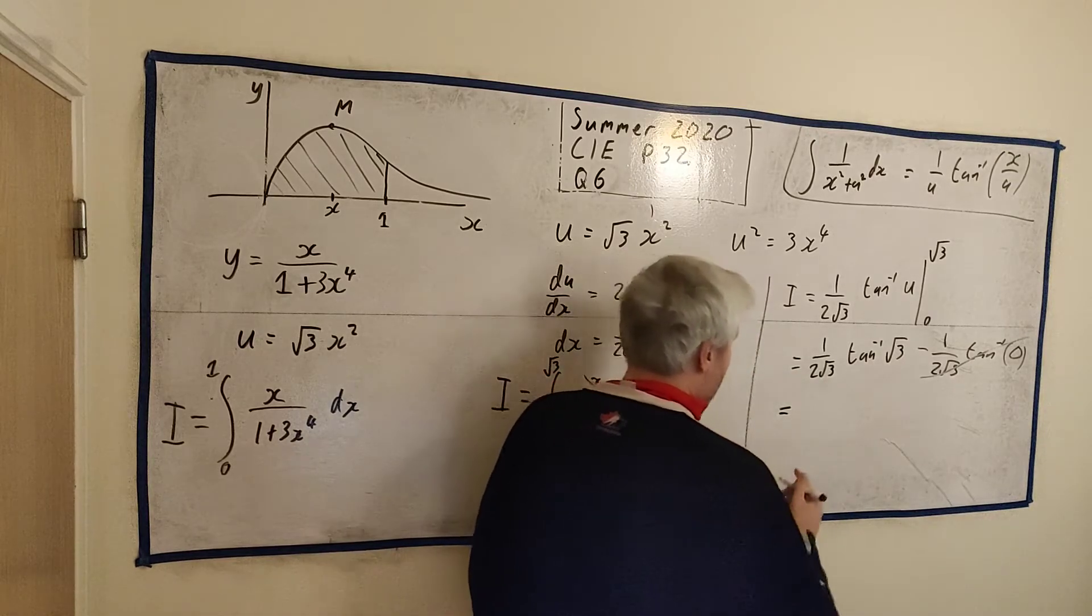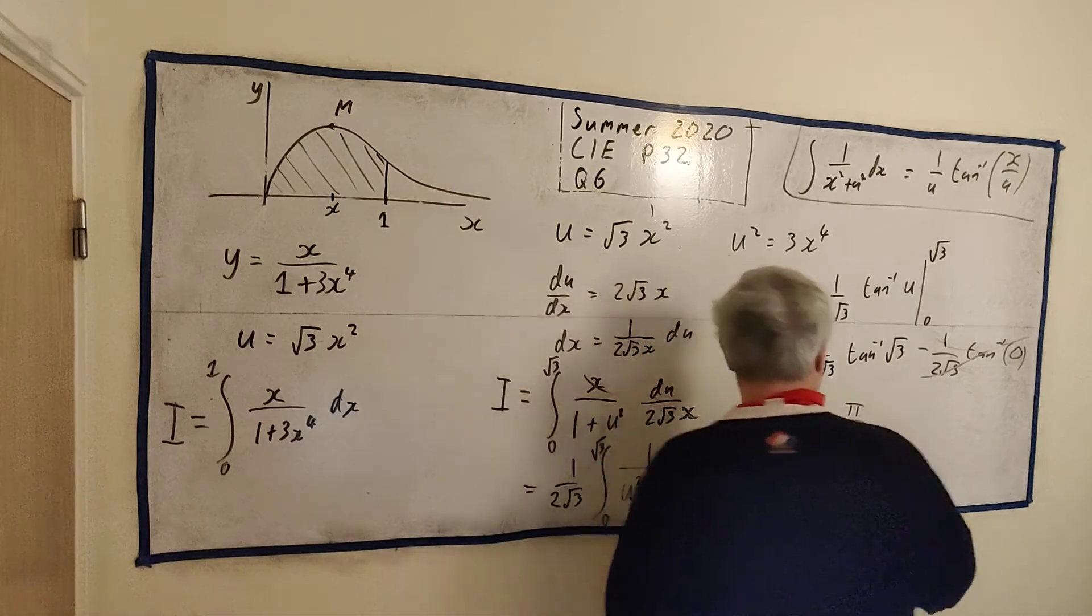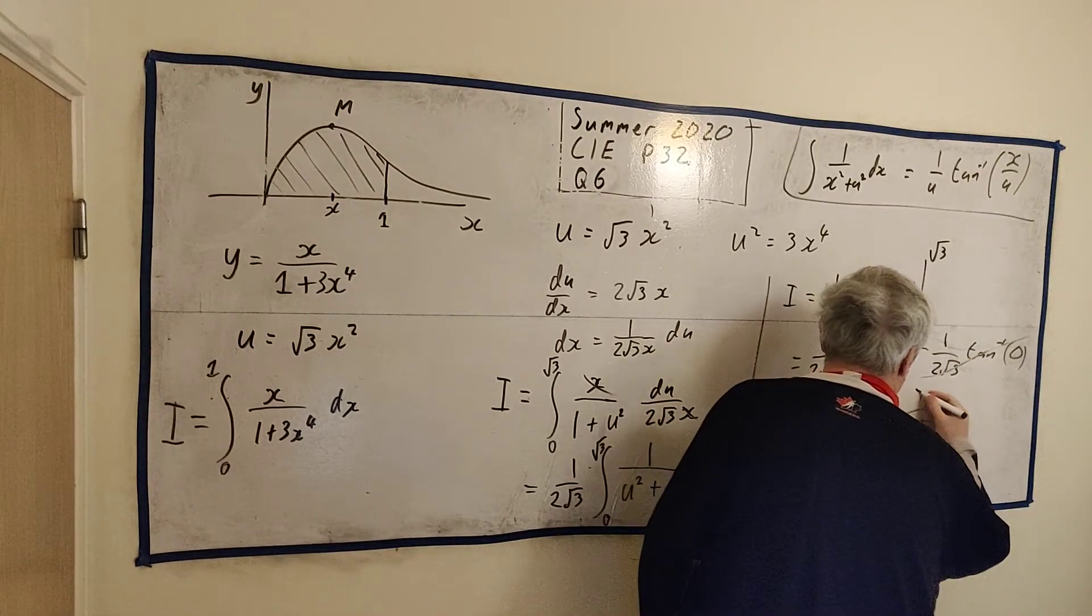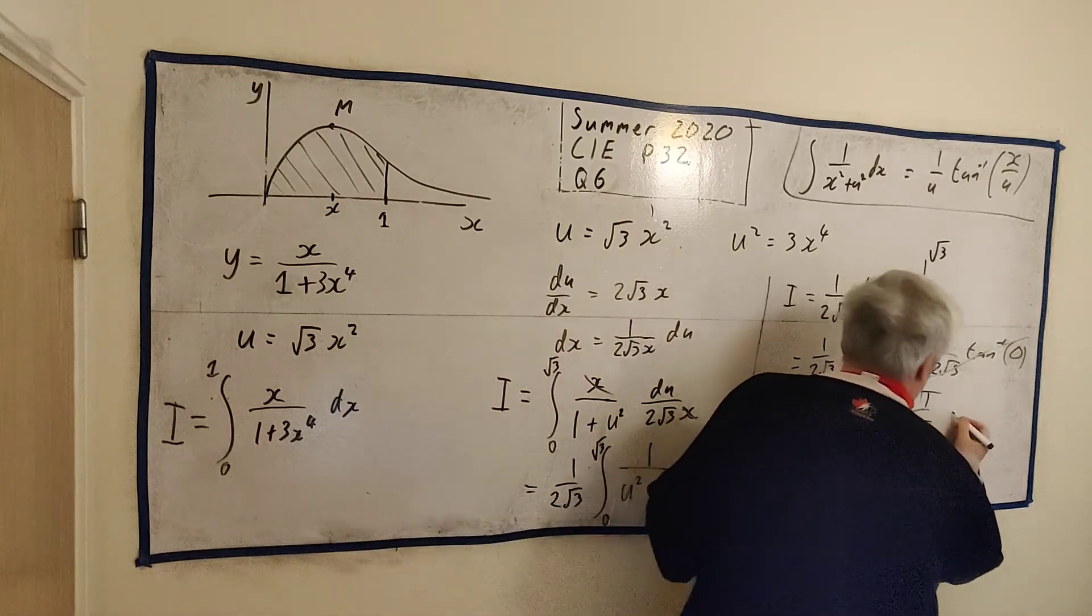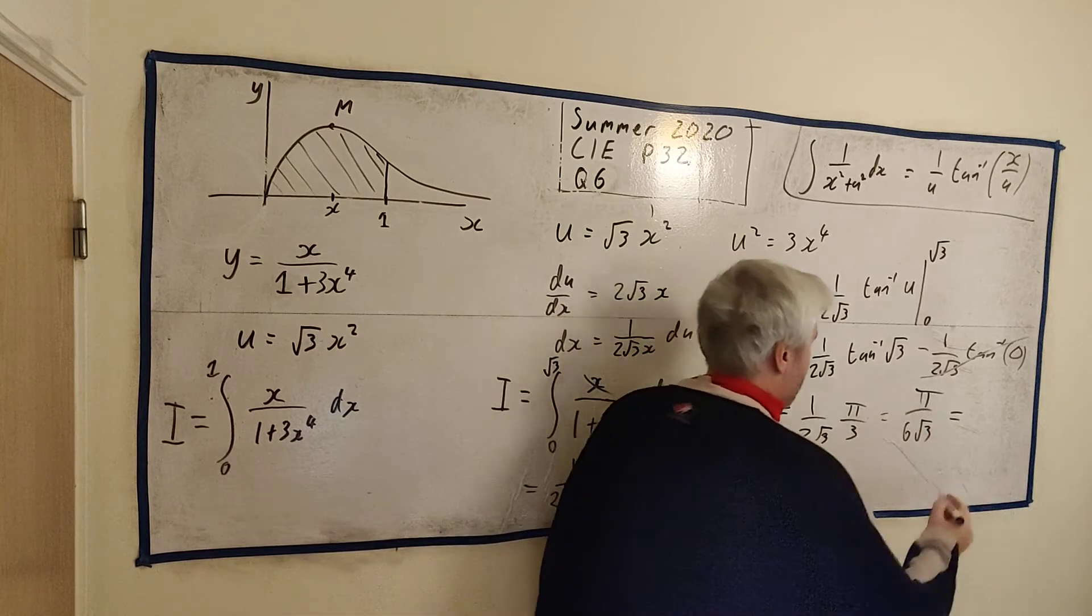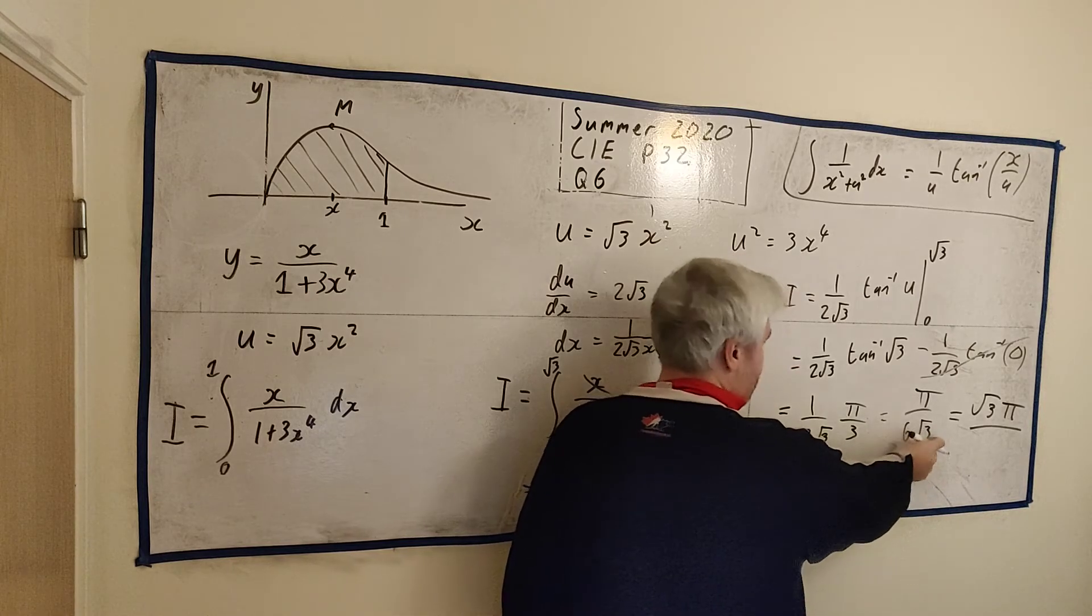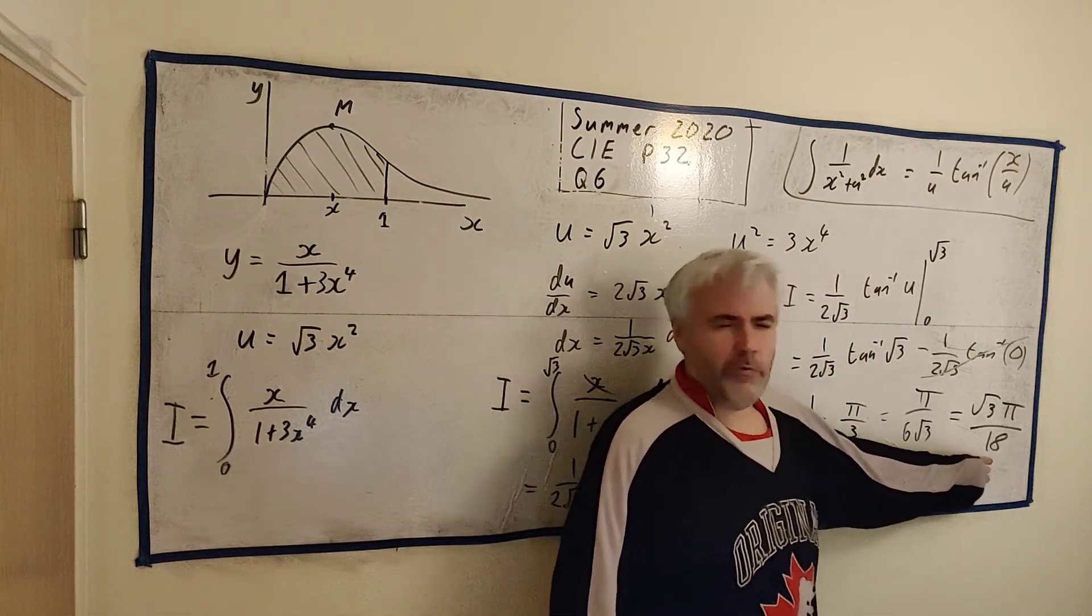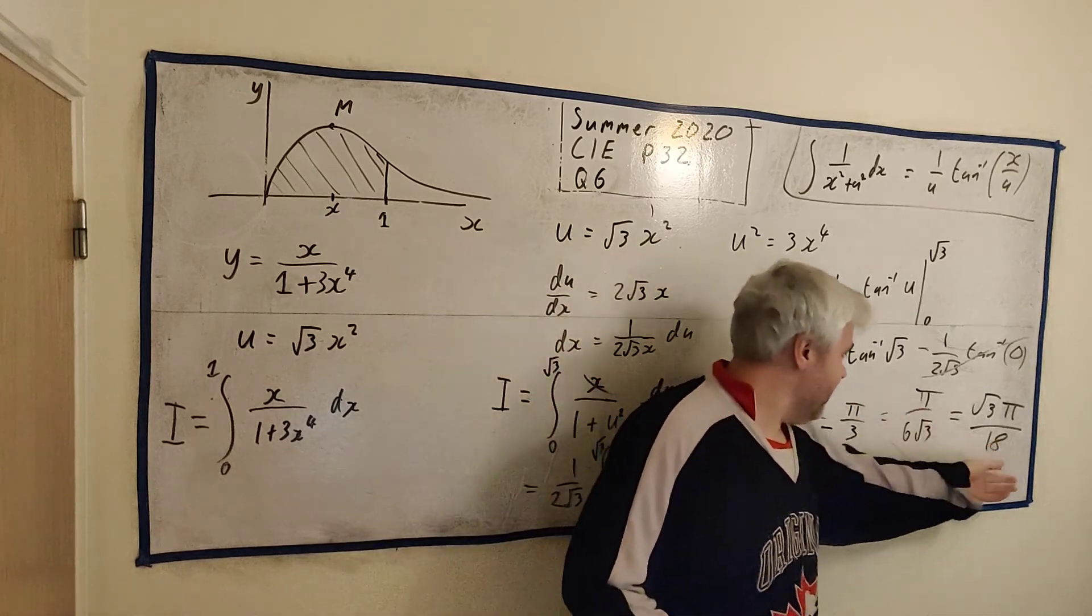So that's 1 over 2 square root of 3 multiplied by π over 3. This is equal to π over 6 square root of 3. The answer given in the book, let's multiply top and bottom by the square root of 3. Top multiplied by the square root of 3 is square root of 3 π. Bottom becomes 18. These two numbers are identical. The exam would rather not have square roots on the bottom row. Either are fine. They will give you full marks for both.